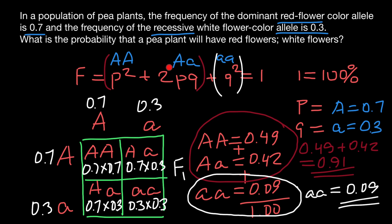Now you understand why we have 2pq in the Hardy-Weinberg formula. A times A is simply AA, or p-squared using different letters. When we consider the heterozygous genotype, it's not just pq — we multiply by two because it appears twice in the Punnett square. Similarly, a times a gives a-squared, or q-squared. So now you understand why the formula looks the way it does.